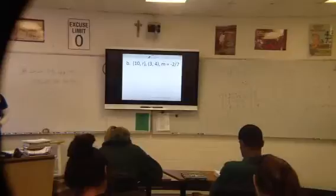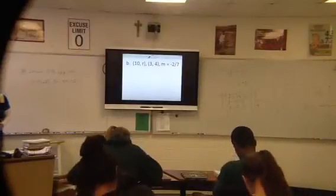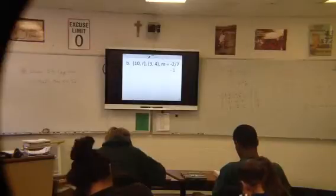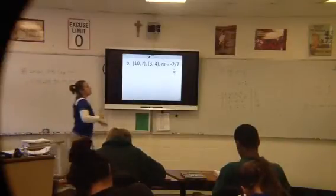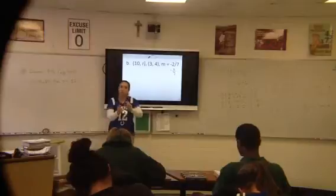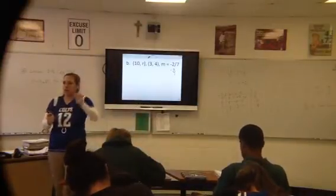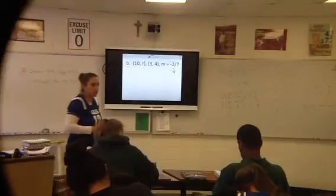So I want you to take a second and try B on your own. Now, real quick, side note. This negative two over seven, I don't care if you put the negative with the two or with the seven, but you don't put it with both. Because if I have a negative over a negative, that's a positive. It's not the same thing. So put the negative on one or the other. I'm going to give you a few minutes here to try B on your own.